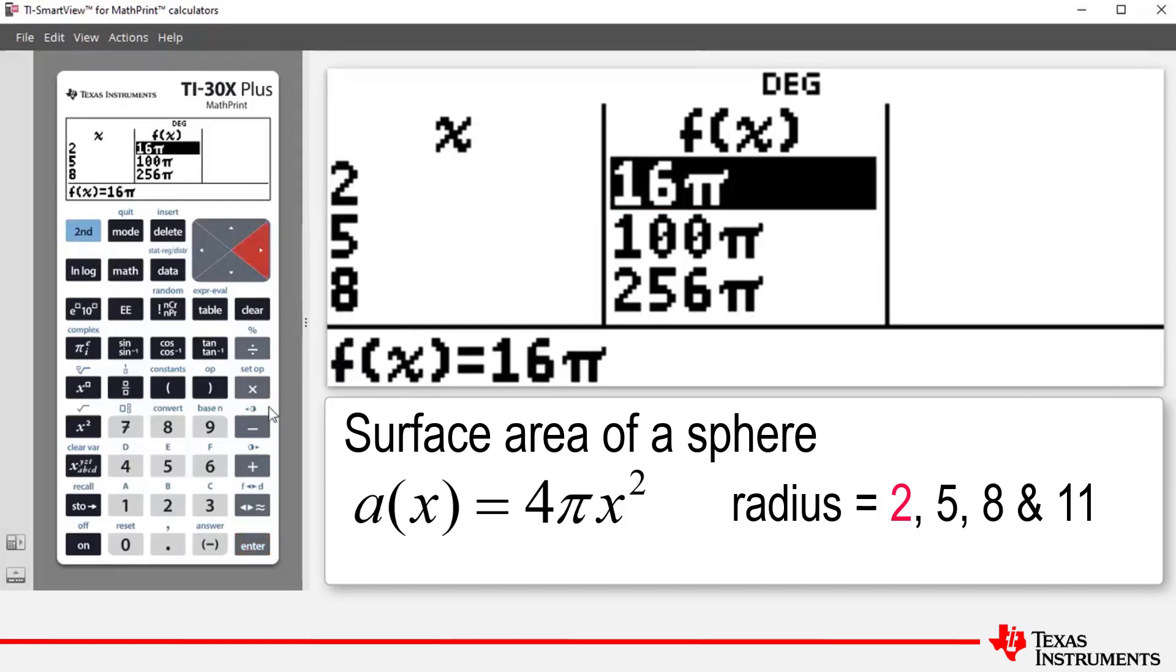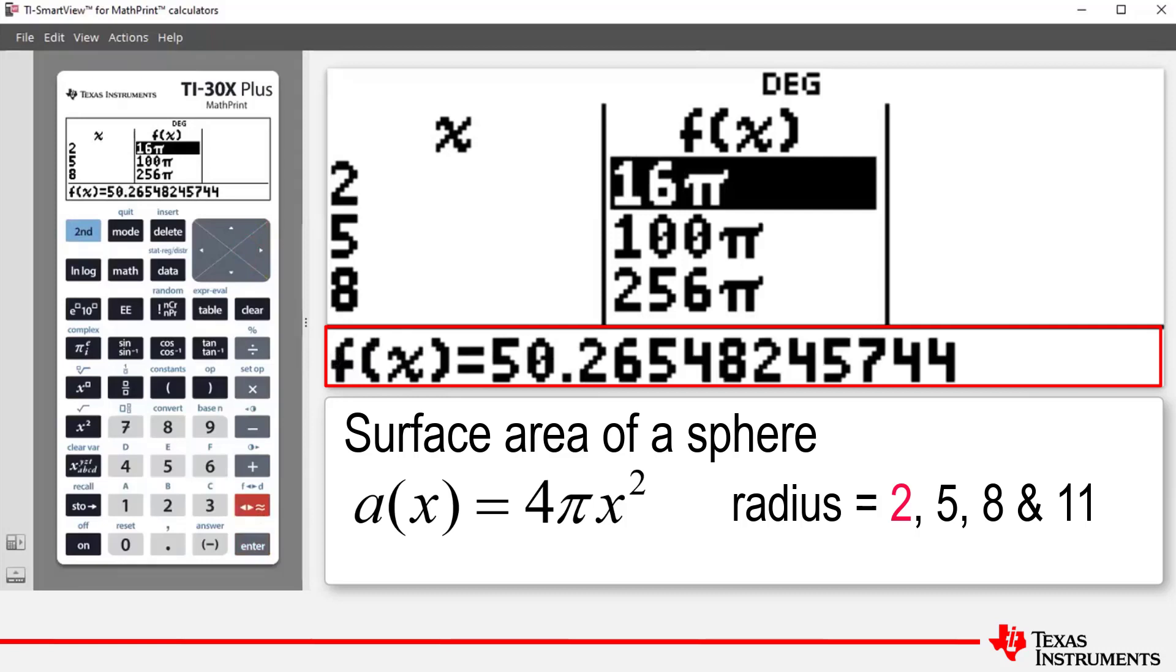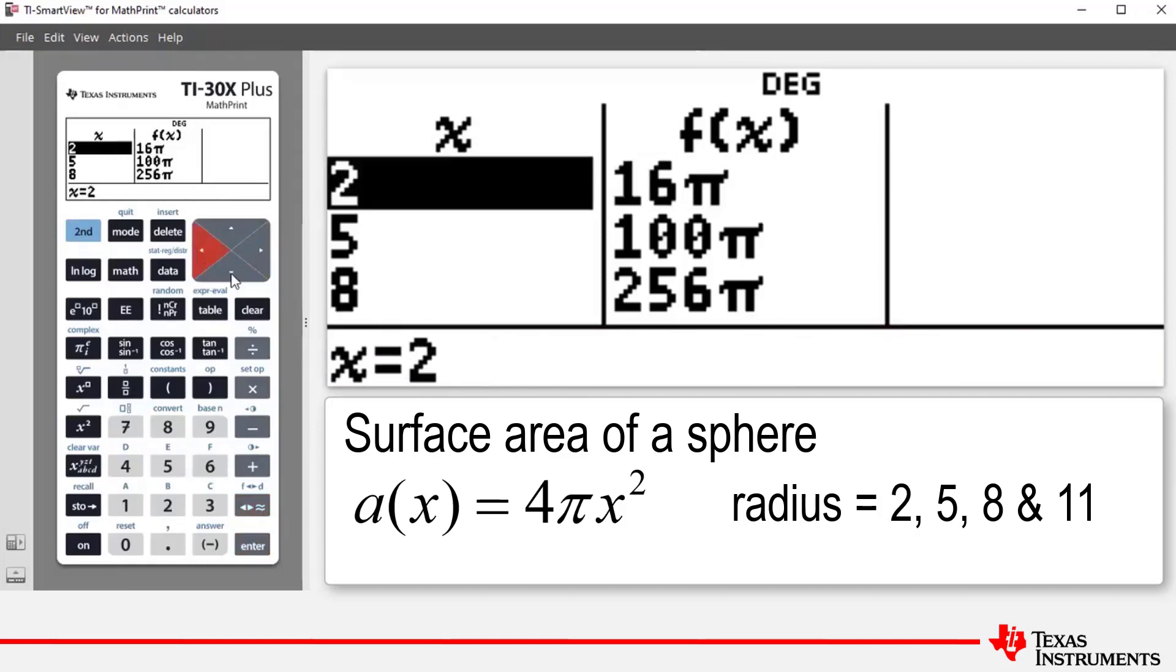To get the decimal answer we can press the fraction or exact value decimal toggle button here, and notice that it gives you an approximate value there in decimal point form, 50.26.